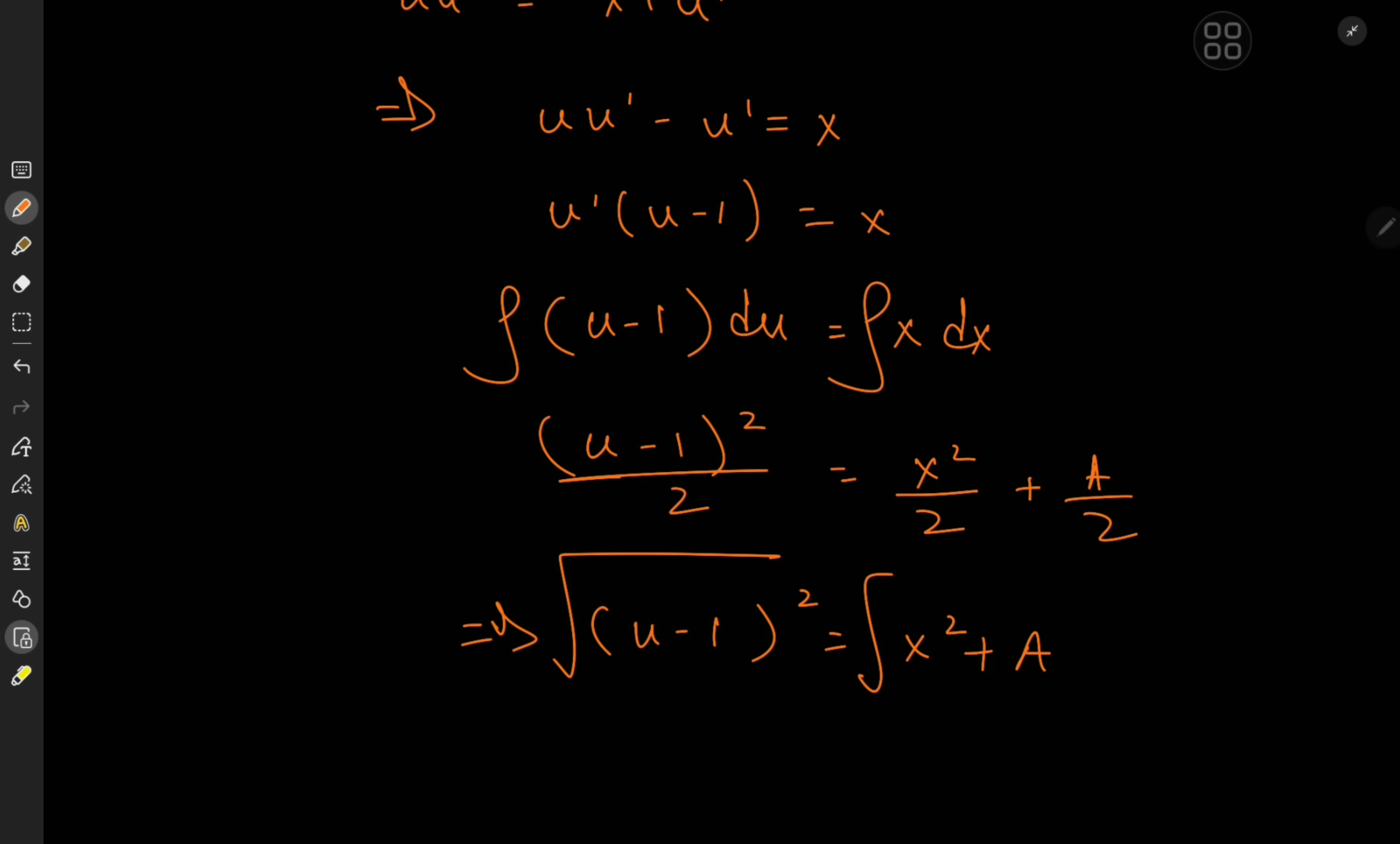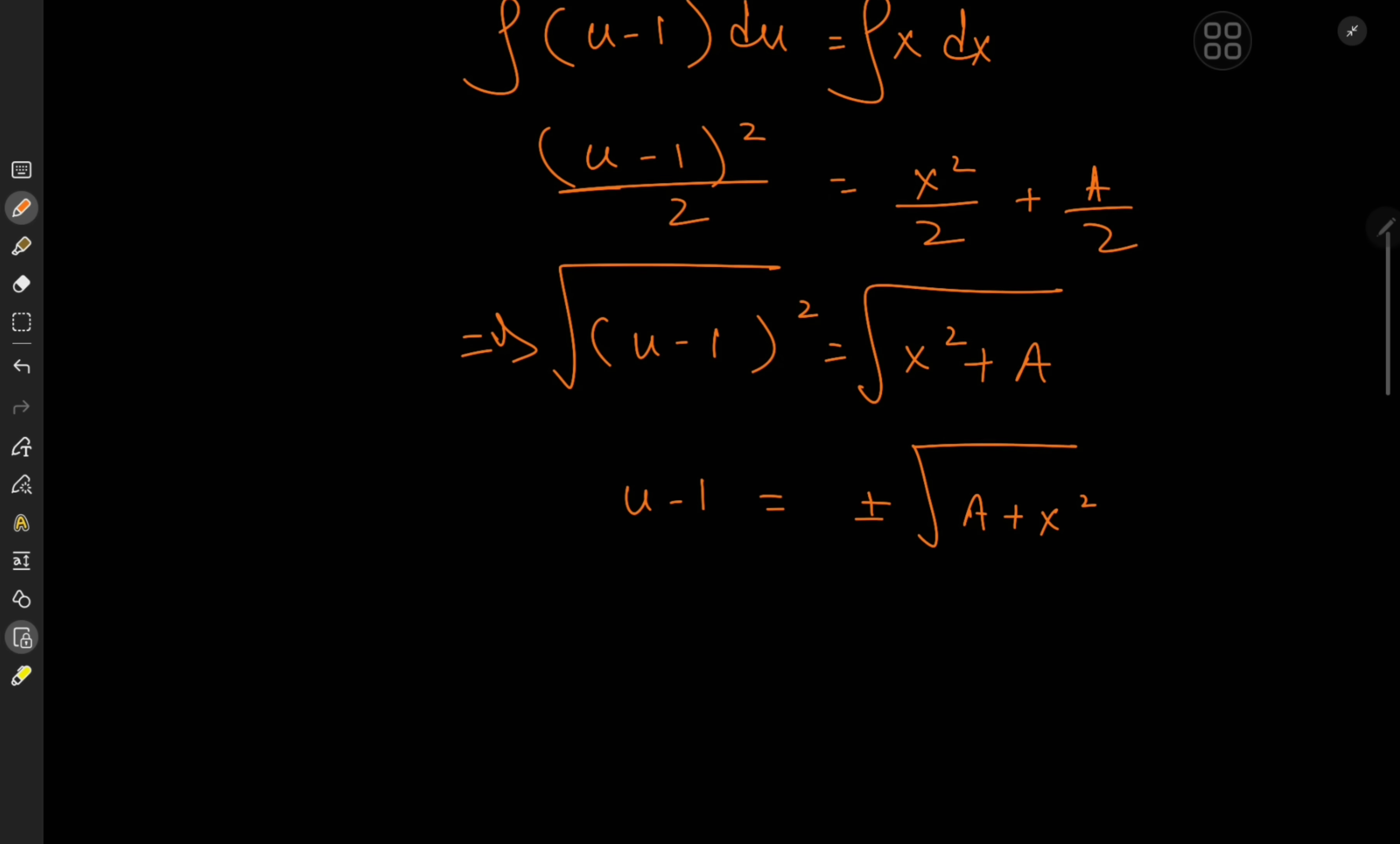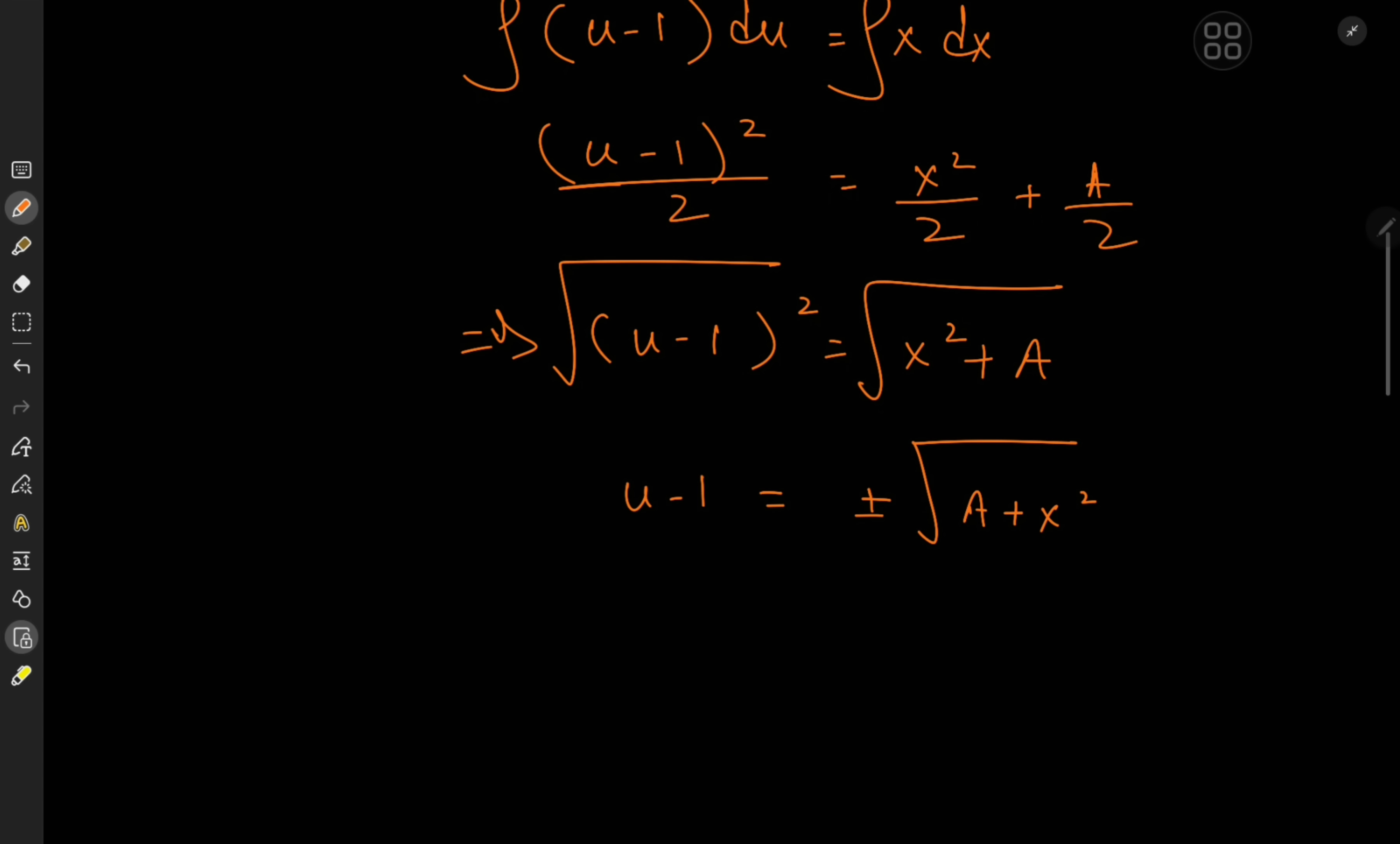That is to say I now have (u - 1)² equals x² + a. And of course I'll take the square root to get u - 1 equals plus or minus √(a + x²). But that's u in terms of x. We're interested in y in terms of x. So we'll recall that u is defined as dy/dx.